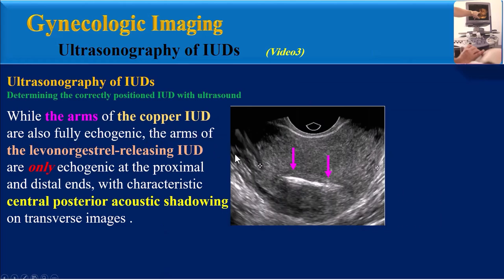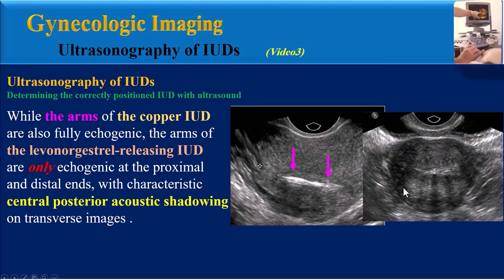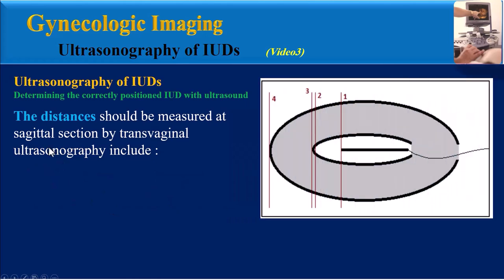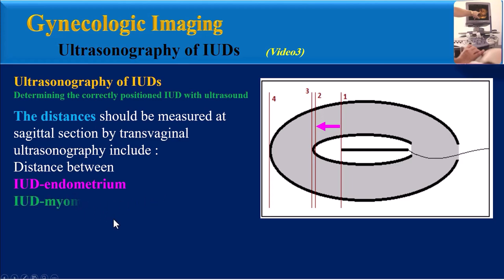While the arms of the copper IUD are fully echogenic, the arms of the Mirena IUD are only echogenic at the proximal and distal ends, with characteristic central posterior acoustic shadowing on transverse images. The distances measured at the sagittal section by transvaginal ultrasonography include: first, the distance between the tip of the IUD and the endpoint of the endometrial cavity, known as the IUD-endometrium distance; second, the distance between the top of the IUD and the myometrium at the myometrial-endometrial junction; and finally, the IUD-fundus distance.